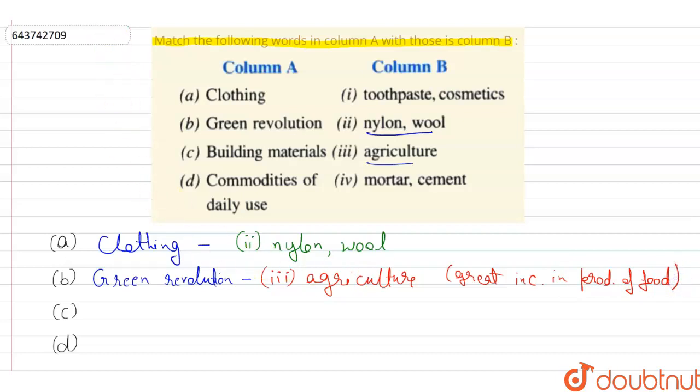The third one is building materials. So building materials are those materials from which our houses and buildings are made. And these materials are mortar and cement. So our option will be fourth, that is mortar and cement.